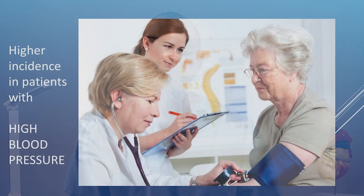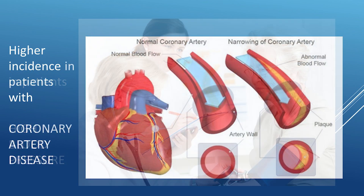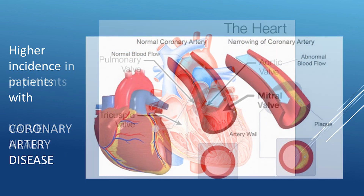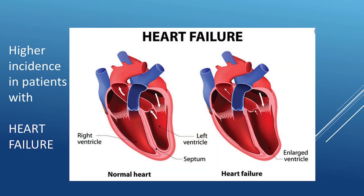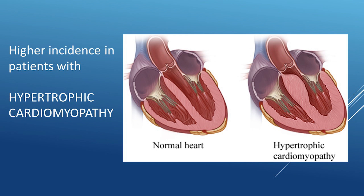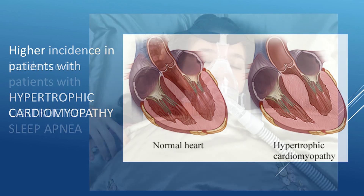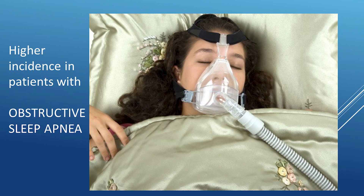Is there an association with other diseases? The answer is yes. Atrial fibrillation occurs with higher incidence in patients with high blood pressure affecting the heart, coronary artery disease, valvular heart disease especially the mitral valve including those who suffered from rheumatic heart disease, heart failure in which the contraction of the heart is weak, hypertrophic cardiomyopathy in which the muscle wall between the lower chambers thickens leading to obstruction of blood flow, obstructive sleep apnea which is an issue with airflow when the patient sleeps, and chronic kidney disease.